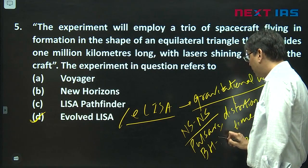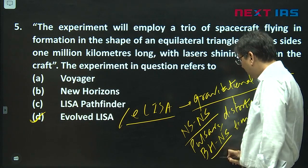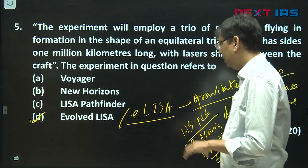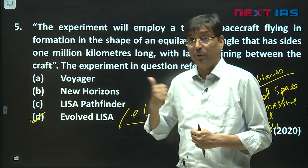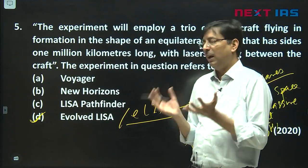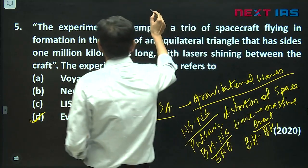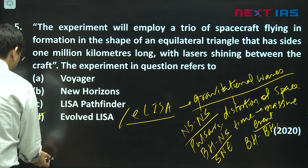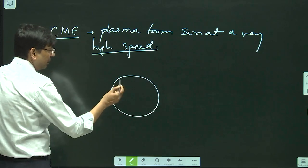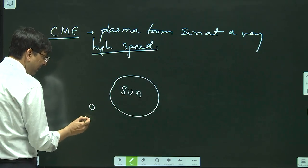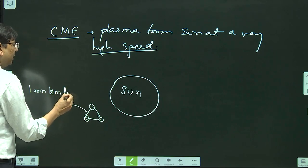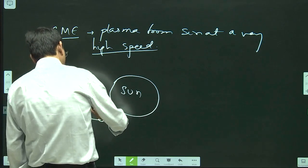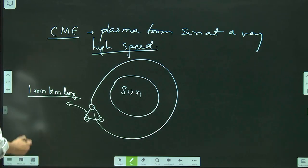It could also be a black hole or neutron star collision, or a supernova explosion. So gravitational waves arise from some massive, cataclysmic events. To detect them, the European Space Agency is planning ELISA: if this is the Sun, around the Sun they will have three spacecraft forming an equilateral triangle where each arm is one million kilometers long, orbiting the Sun. This is called ELISA.